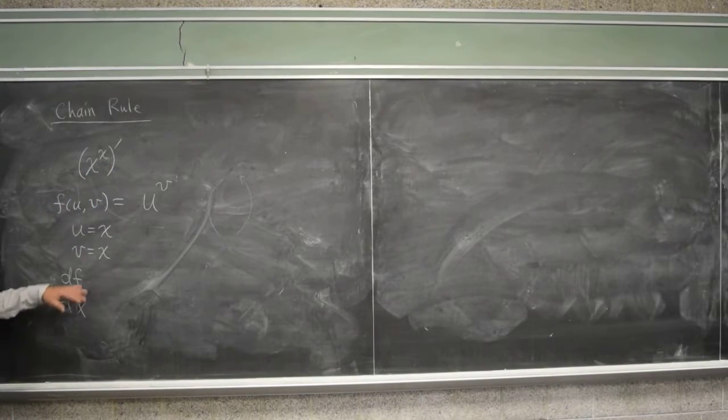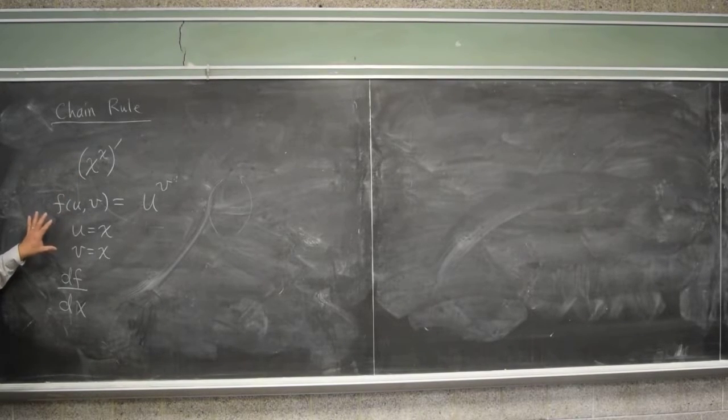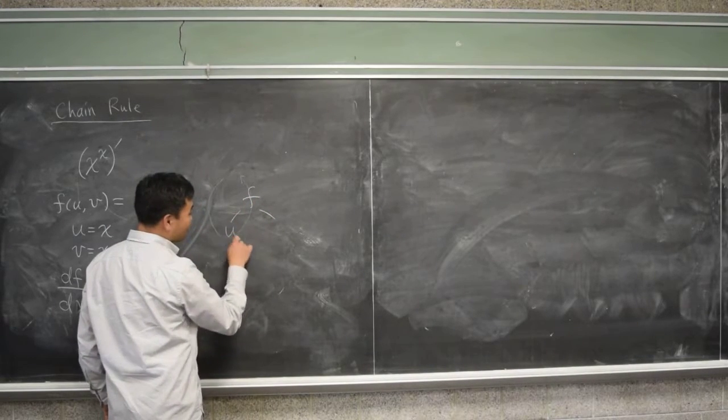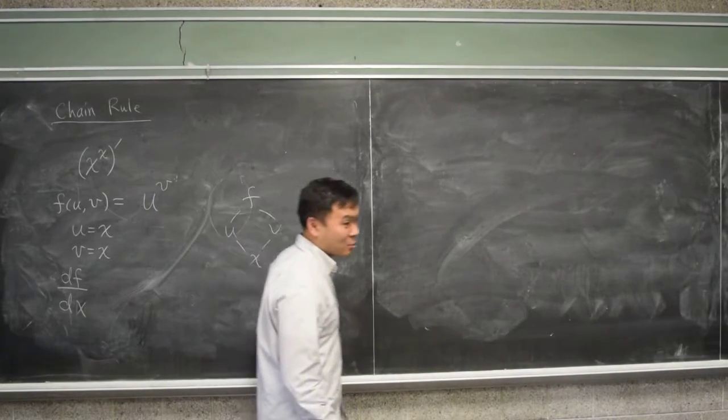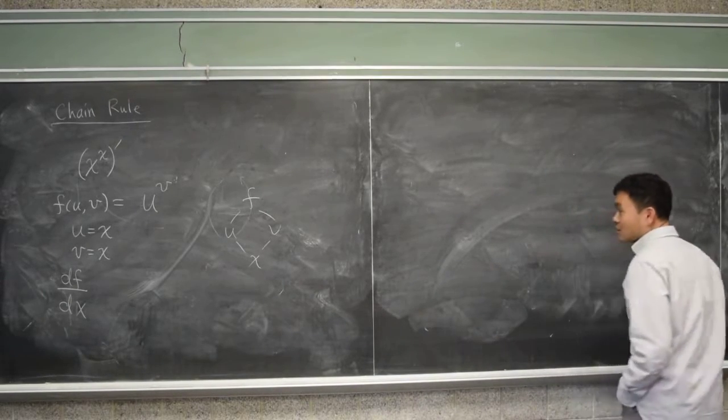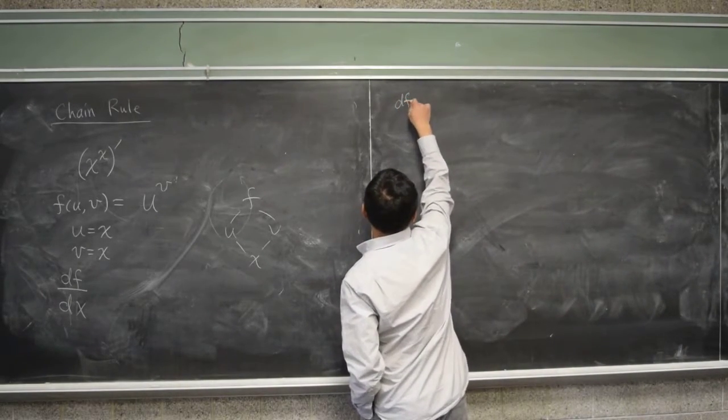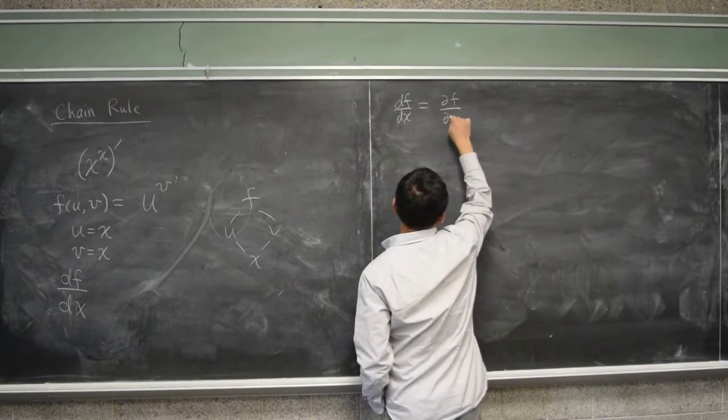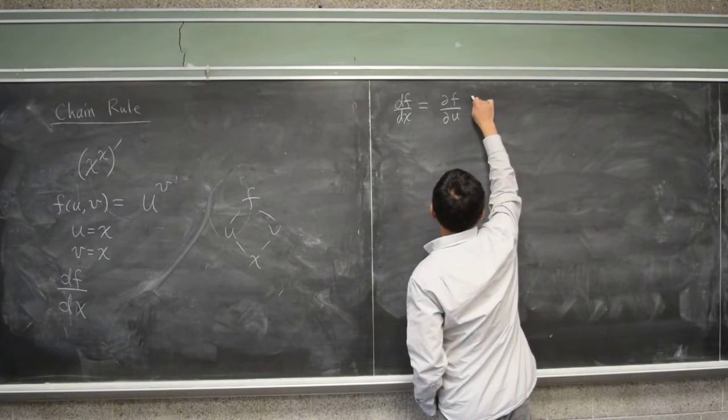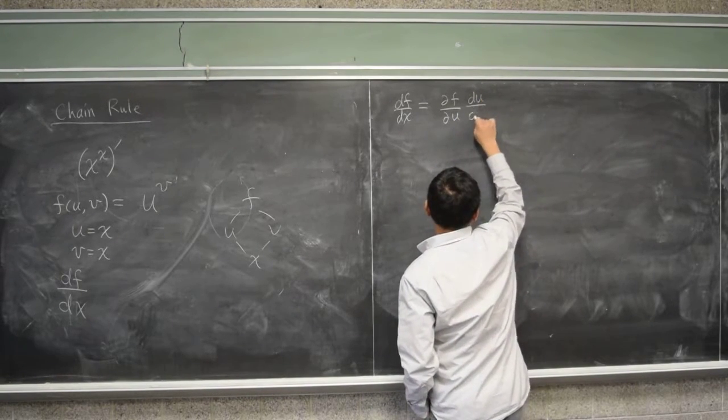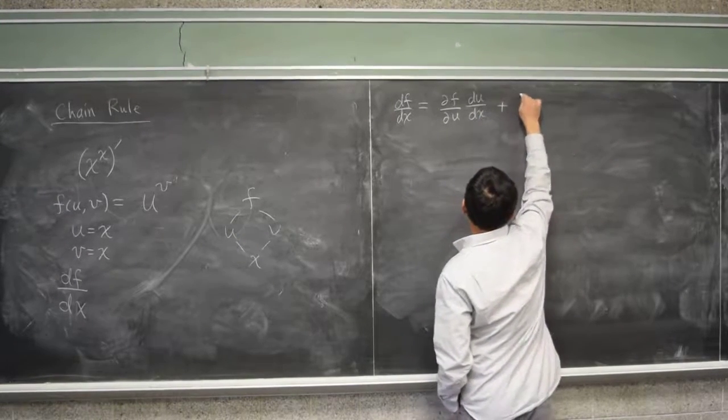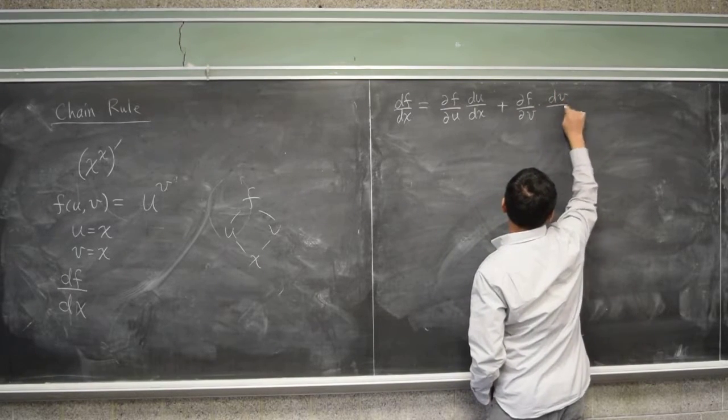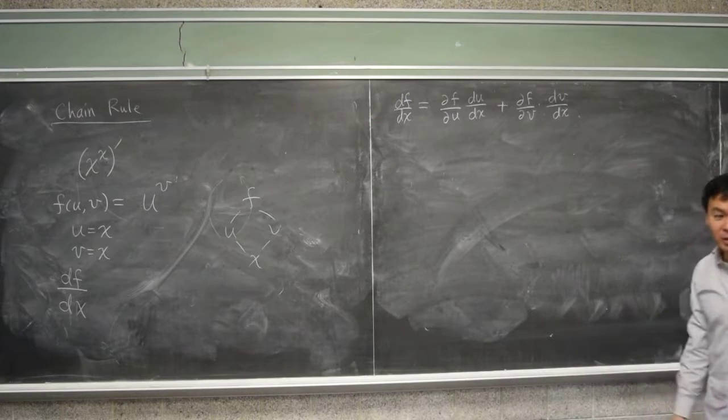So that's how I rephrase this question in a Calc 3 context. The dependence diagram is f depends on u and v, and u and v both depend on x. And therefore, if I want df dx, the multivariable chain rule says, first I have to figure out how f changes when you change u, and then I have to figure out how u changes when I change x, plus I have to figure out how f changes when I change v, times how v changes when I change x.